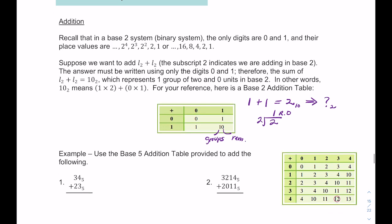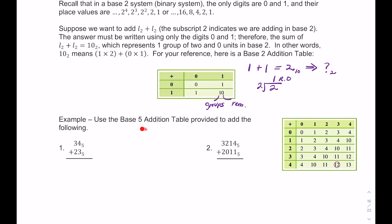You can make addition tables for any base. For base 5, the digits allowed are 0 through 4. When you add 0 to any number, you just get those numbers back. Notice that 1 plus 4 gives 10 in base 5, because 1 plus 4 is 5, and since we can only use digits 0 through 4, 5 goes into itself one time with remainder 0 — giving us 10.